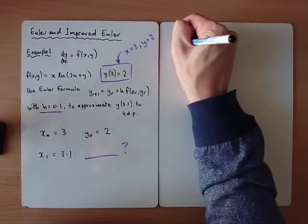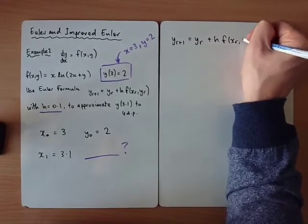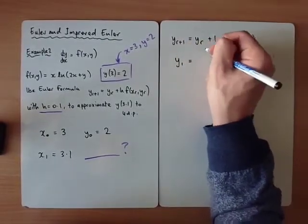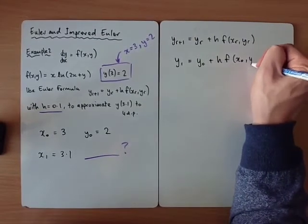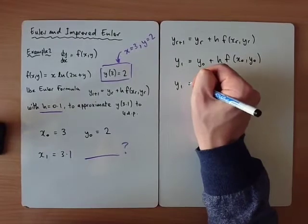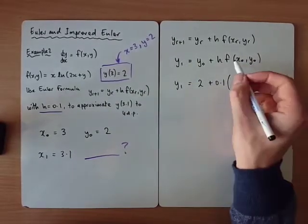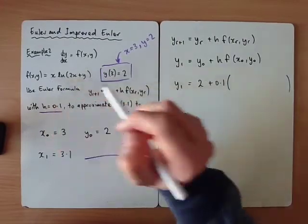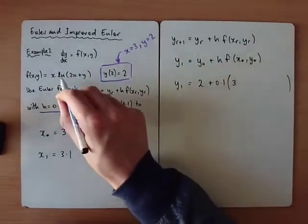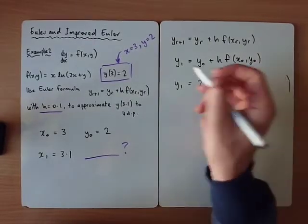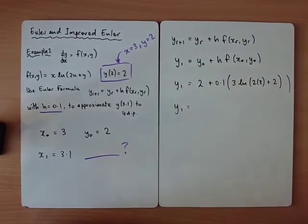Okay, so let's look at the formula that we're going to use. So we would say, well, y1 would equal y0 plus h, and we evaluate the function with, because it's a function of x and y, we have to sub in x0 and y0. So y0 is 2, h is 0.1, open up a bracket, so into our function, which is our derivative, we sub in our x and our y value. So we've got x, which is 3 ln, 2x, plus y.